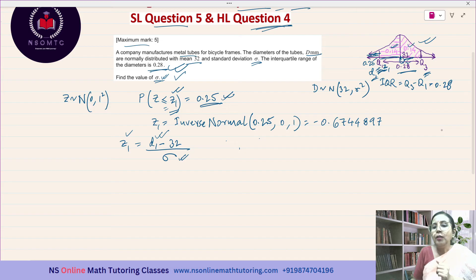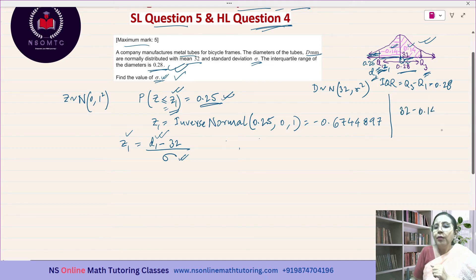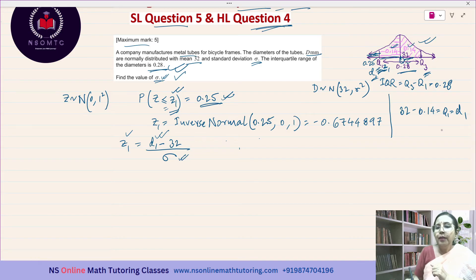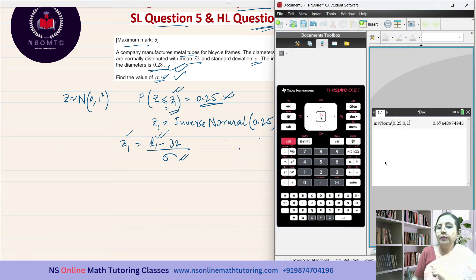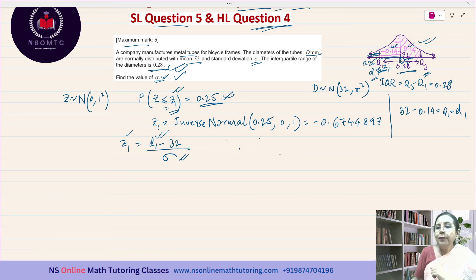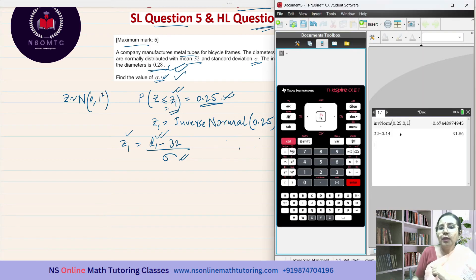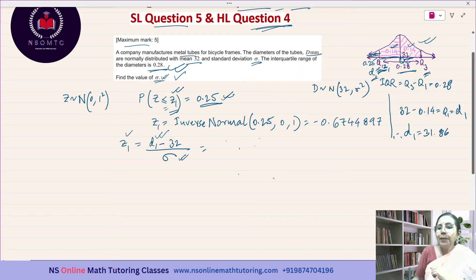I know the median value is 32, and this distance equals 0.14. So I can get the Q1 or d1 value. That's why I need the d1 value. d1 will be equal to 32 minus 0.14. Let us get the value: 32 minus 0.14 equals 31.86. So d1 equals 31.86.